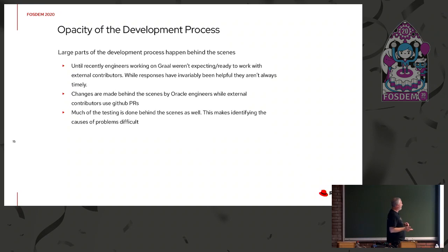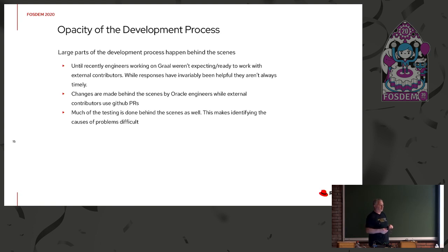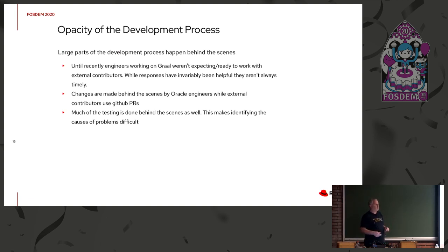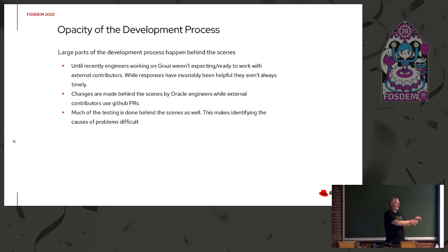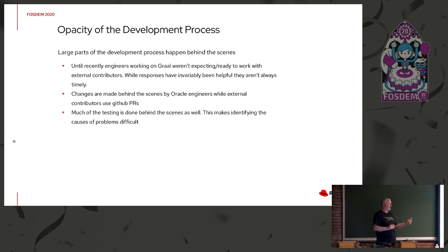The really biggest problem was the development process. The Graal engineers at that stage were working on their own repo with their own management system, and they put up a GitHub repo with PRs for us to try and push things in. But they were really focused somewhere else and weren't ready to be receiving things from us. The final testing stage was done behind the scenes at Oracle, so when we put changes in and did get them through, we would sometimes get a cryptic message that something had gone wrong but couldn't see what, because we couldn't see the tests or what changes Oracle were putting into the code base.